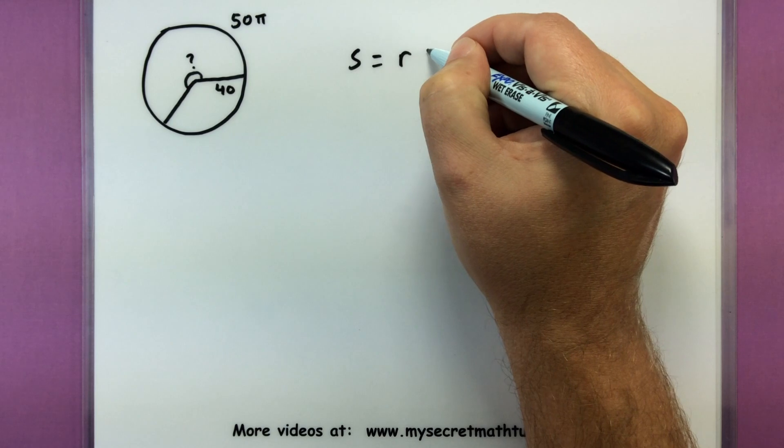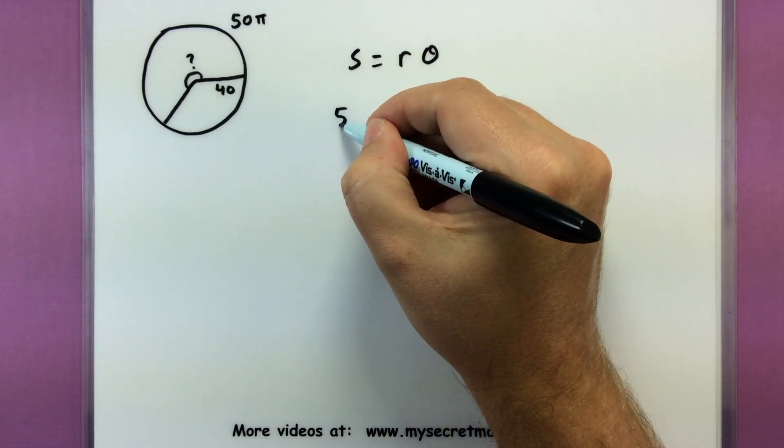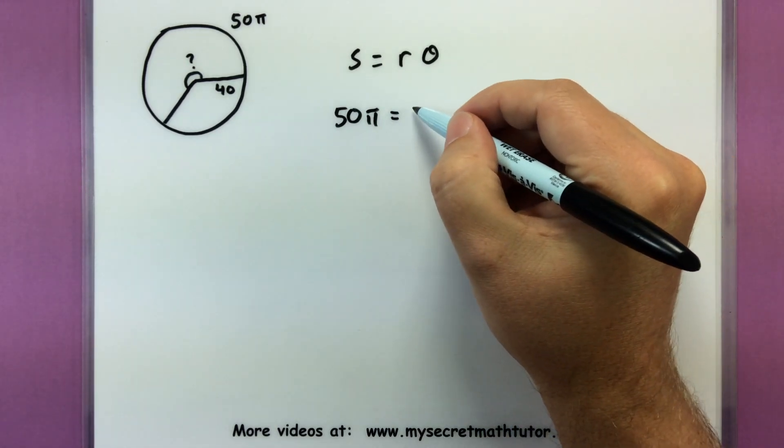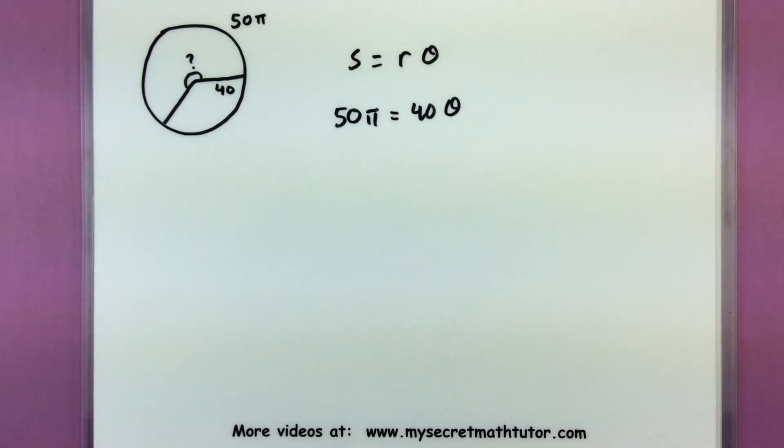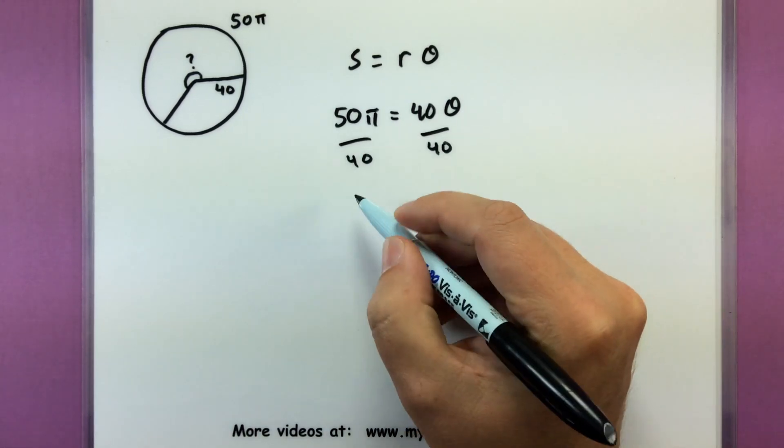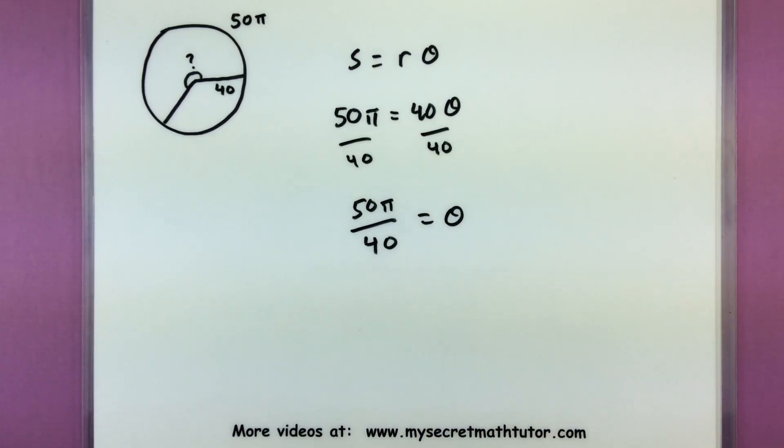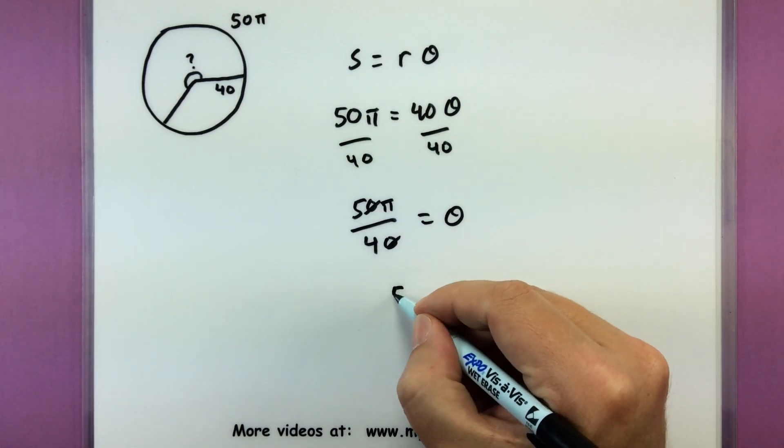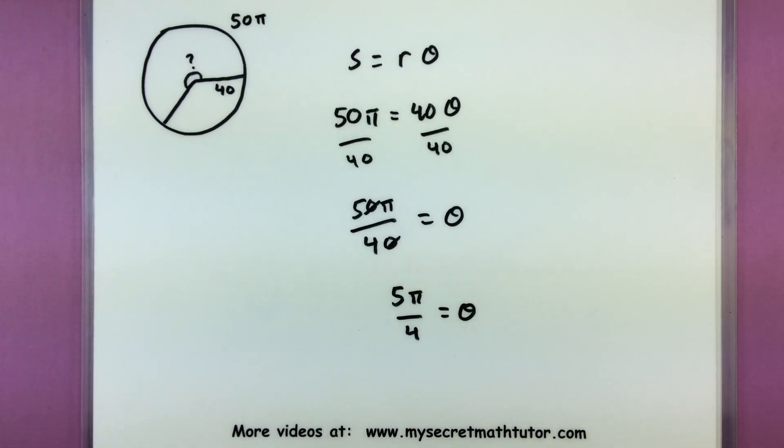Arc length equals radius times angle. Let's drop in all our information. Arc length is 50π. The radius is 40. But we don't know the angle, so let's leave that as θ. To solve, we divide both sides by 40 and reduce that fraction. 10 goes into the top and bottom, so I end up with 5π/4. There's my angle already in radians.